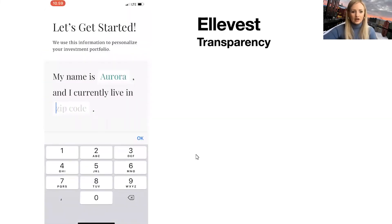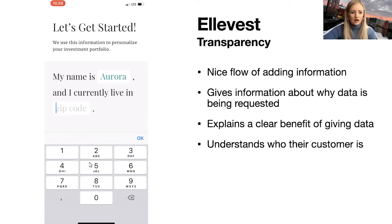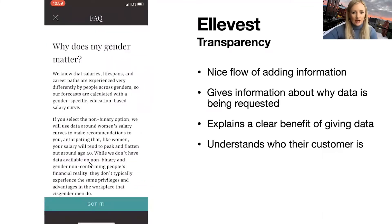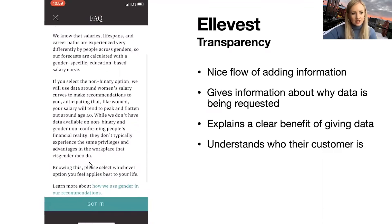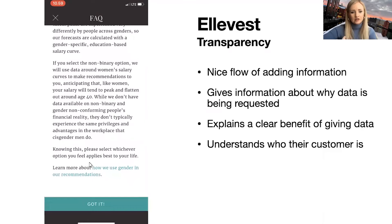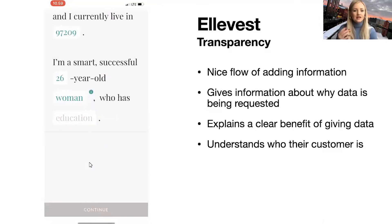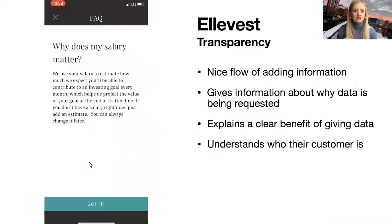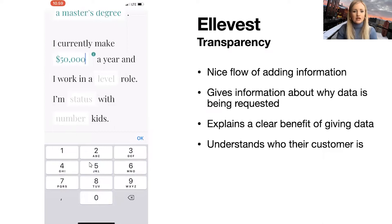Here's another example from Ellevest, a portfolio company for women that manages your stocks. It has a nice flow of explaining what data is being asked for. When setting up a profile, they ask for things like gender and income, and give easy access to information through an info icon explaining why gender matters. It explains the benefit of giving this data — how knowing your gender improves portfolio management because they understand how women's salaries change over time versus men's. I'm happily giving up that information because it provides a clear benefit.